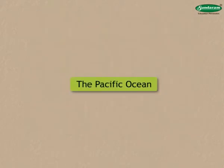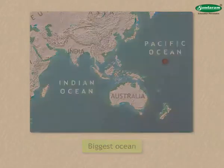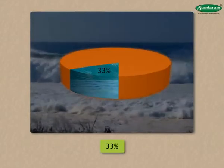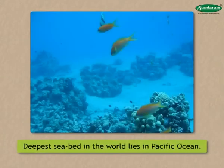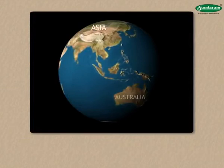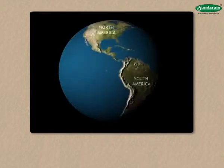The Pacific Ocean is the biggest ocean. About 33% of the earth's surface is occupied by this ocean. The deepest seabed in the world lies in this ocean. The continents of Asia and Australia are to the west of this ocean. The eastern limit of this ocean is determined by the continents of North and South America.